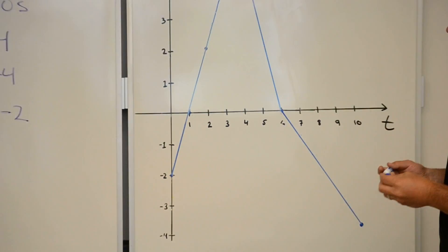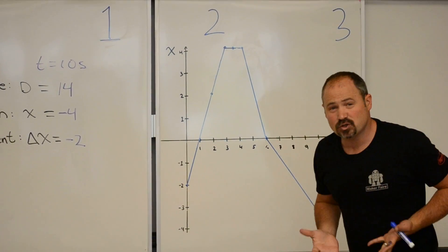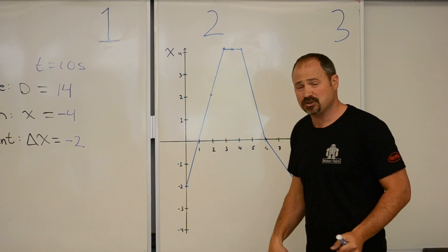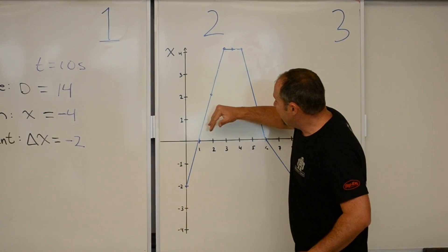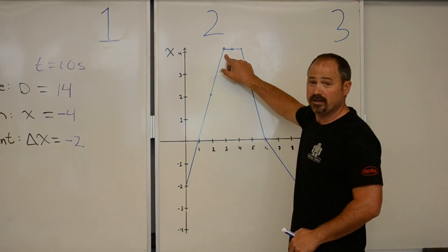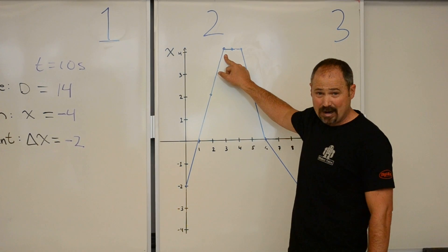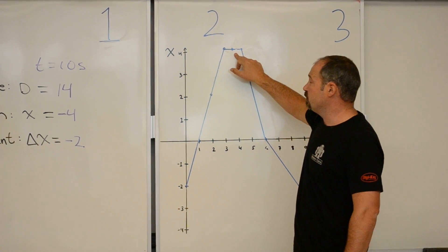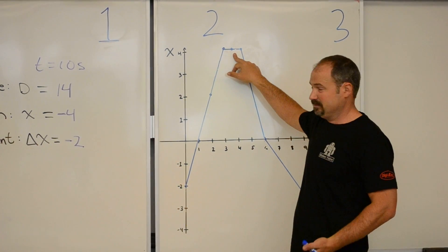And, the graph tells you the story. It tells you where you're at, but it also tells you how fast you're going. A steep positive slope tells you you're going quickly in the positive direction. Here, a slope of 0 tells you you're not going anywhere.